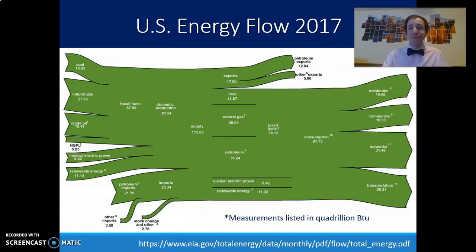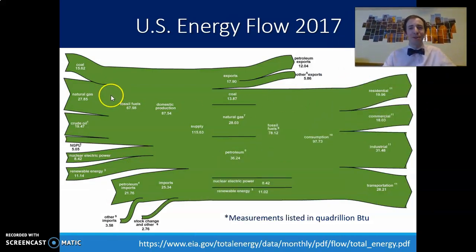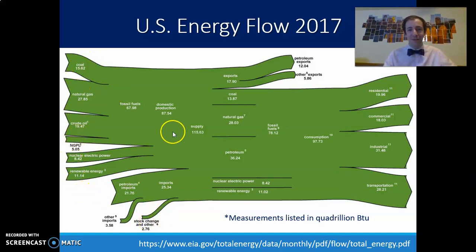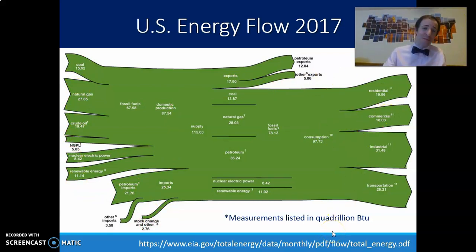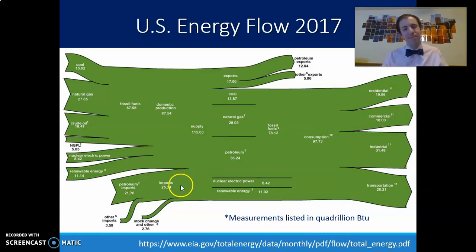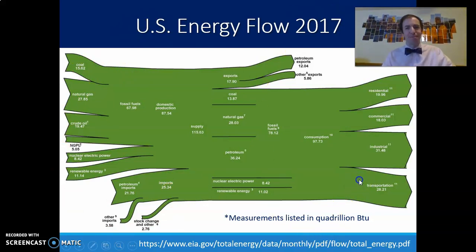Sankey diagrams can be used to the extreme. This is what the U.S. energy flow looked like in 2017. You can see all the different sources of energy coming in from a variety of places and what they were used for coming out. Again, the width of the arrow is what's important here — the thicker the arrow, the more energy is represented — and all the energy in must equal all the energy out.